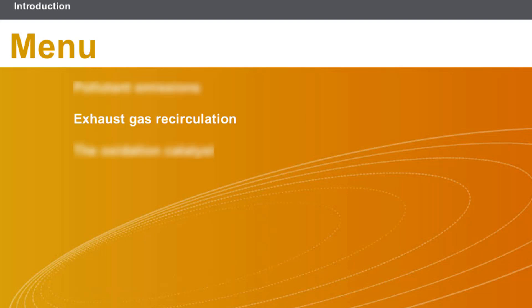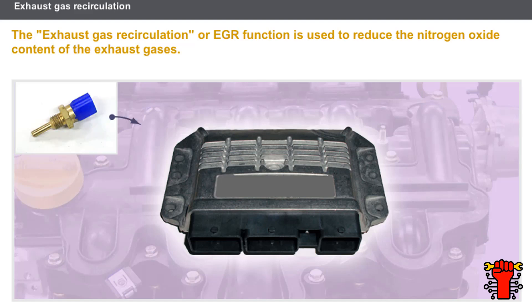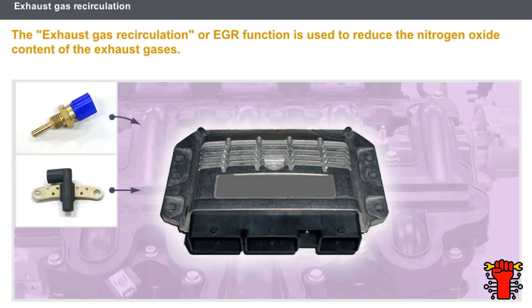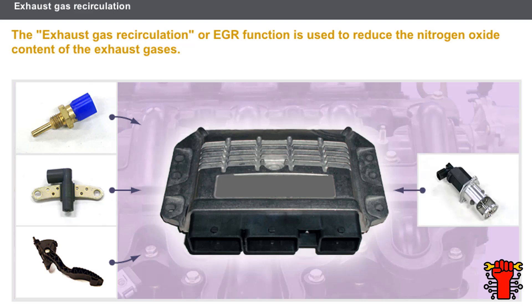This lesson will cover exhaust gas recirculation. The exhaust gas recirculation, or EGR, function is used to reduce the nitrogen oxide content of the exhaust gases. This function uses the following components: the coolant temperature sensor, the engine flywheel sensor, the accelerator pedal position sensor, the exhaust gas recirculation valve, and the exhaust gas recirculation valve position sensor.